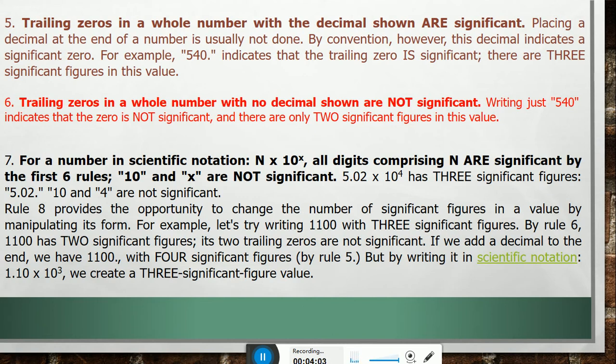Rule 7 provides the opportunity to change the number of significant figures in a value by manipulating its form. For example, let's try writing 1100 with three significant figures. By Rule 6, 1100 has two significant figures.